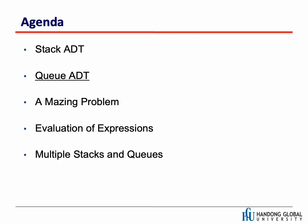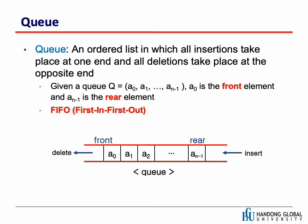The next data structure is queue, which is very similar to stack but slightly different in definition, specifications, and implementations. A queue is an ordered list in which all insertions take place at one end and all deletions take place at the opposite end. In the stack, insertions and deletions take place at the same side, but in the queue, insertion takes place at one side and deletions take place at the other side. Given a queue, node 0 is the front element and node n-1 is the rear element.